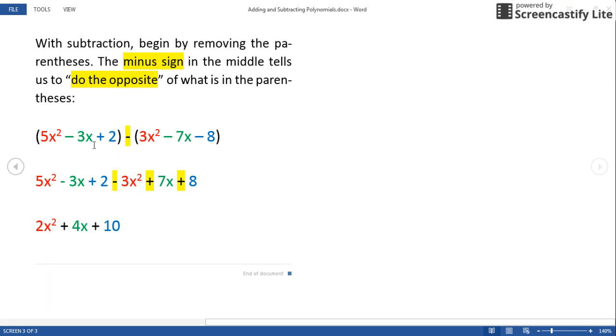For instance, if we're trying to subtract these two trinomials, the minus sign here in the middle says that I should do the opposite of each thing back here.